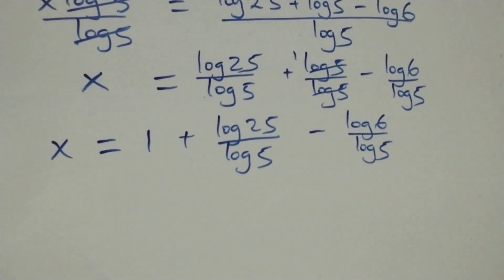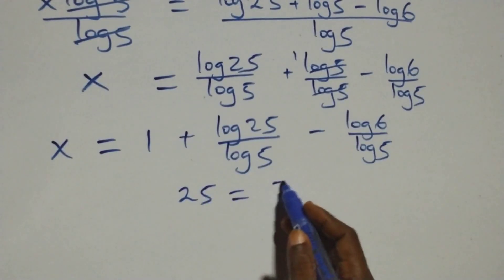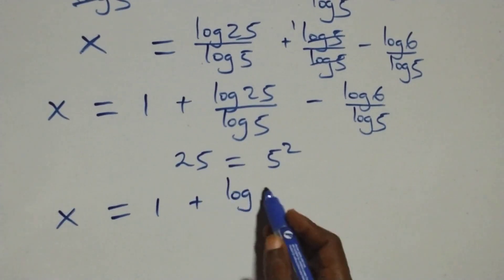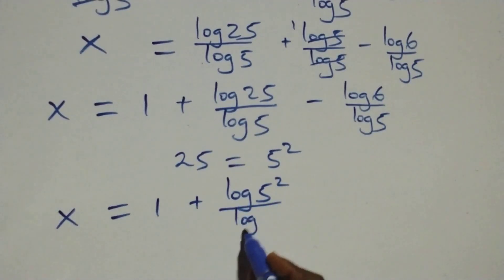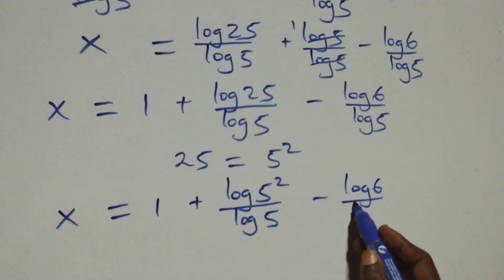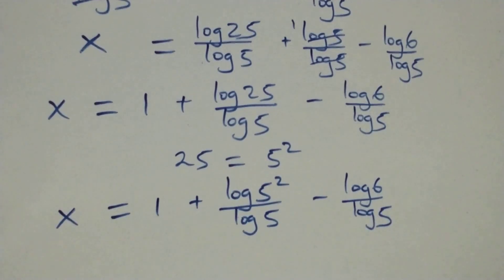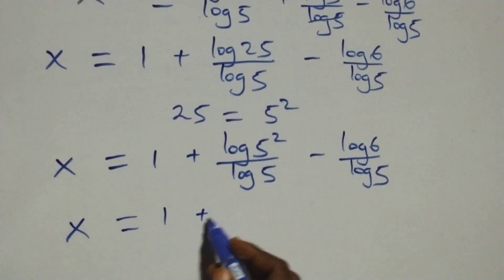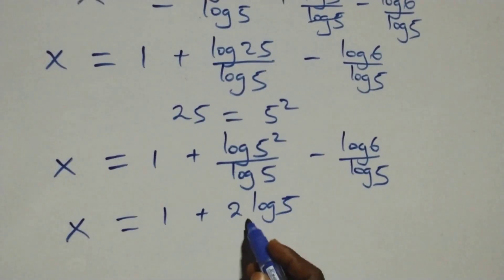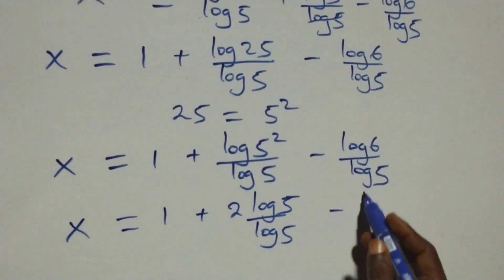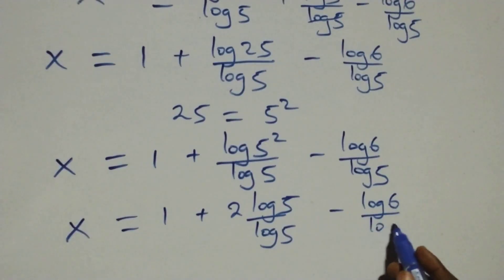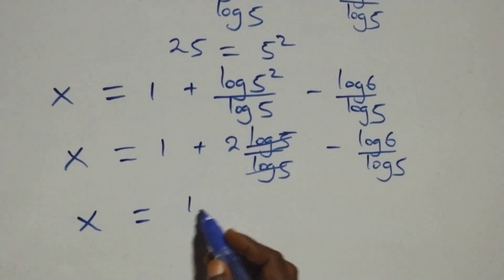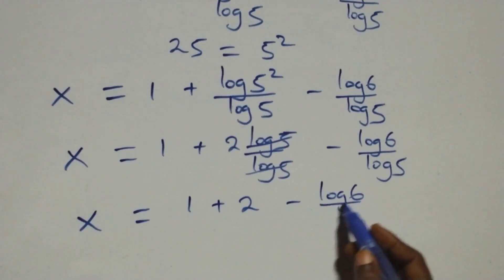We can write 25 as 5 squared. So log 25 over log 5 becomes 2 log 5 over log 5, which equals 2. And log 5 over log 5 equals 1. So x equals 1 plus 2 minus log 6 over log 5.